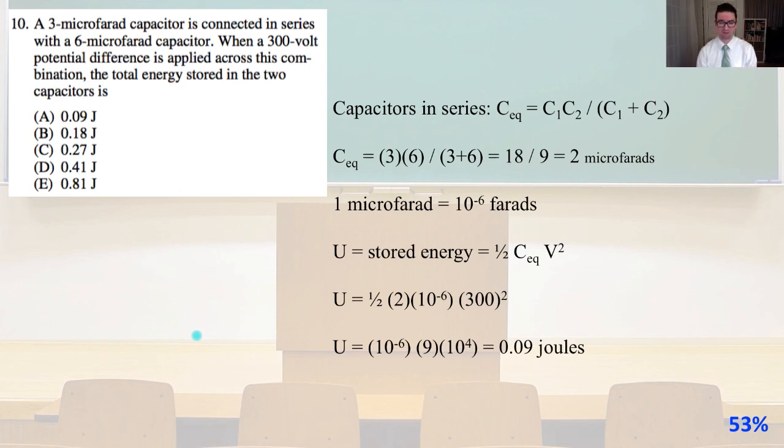Capacitors in series: the equivalent capacitance equals C1·C2 over (C1 plus C2). So the equivalent capacitance equals 3 times 6 divided by 3 plus 6, equals 18 over 9, equals 2 microfarads. From our cover sheet, we know that 1 microfarad equals 10 to the minus 6 farads.